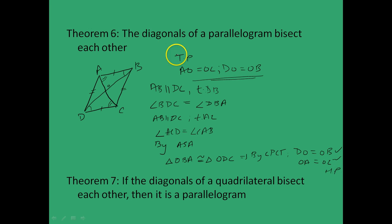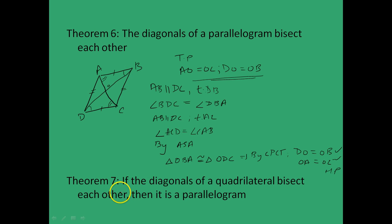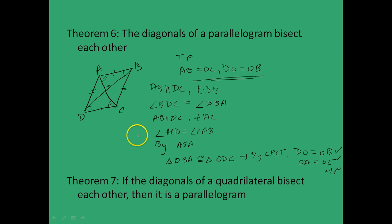That is how we proved Theorem 6. Theorem 7 states: if the diagonals of a quadrilateral bisect each other, then it is a parallelogram — which is the converse of Theorem 6. The proof is elementary and you are invited to try it as an exercise. Next up, we will look at more theorems regarding parallelograms as well as the important midpoint theorem, but we will stop here for this lecture. Thank you for watching.